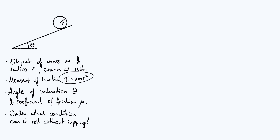For example, if it's a sphere, k is two-fifths. If it's a solid cylinder, k is a half. If it's a hollow cylinder, k is one. The plane is inclined by an angle theta relative to the horizontal, and the coefficient of friction between the plane and the rolling object is mu.